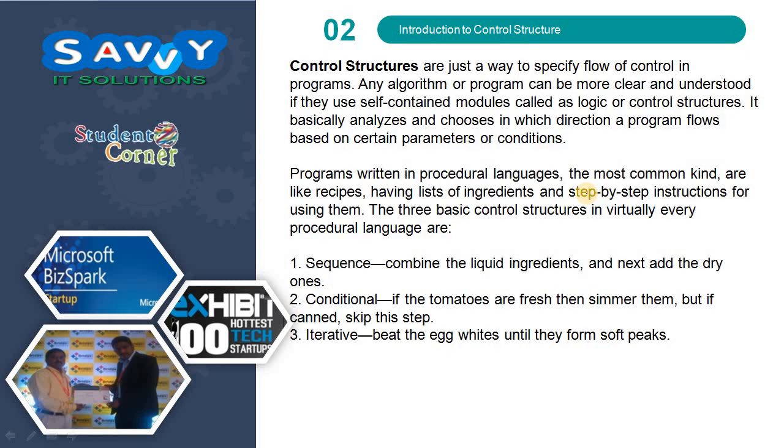Control structures are just a way to specify flow of control in programs. Any algorithm or program can be more clear and understood if they use self-contained modules called logic or control structures. It basically analyzes and chooses in which direction a program flows based on certain parameters or conditions.